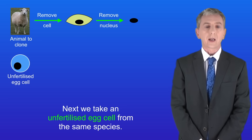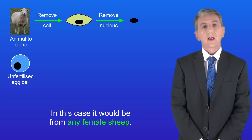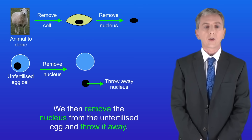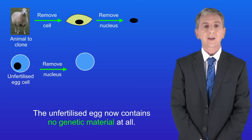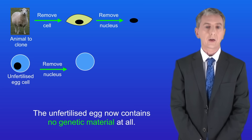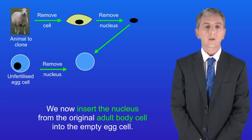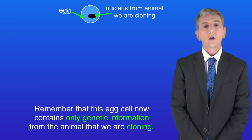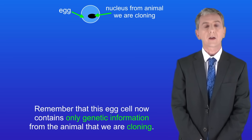Next we take an unfertilised egg cell from the same species — in this case from any female sheep. We then remove the nucleus from the unfertilised egg and throw it away, so the unfertilised egg now contains no genetic material at all. We now insert the nucleus from the original adult body cell into the empty egg cell. This egg cell now contains only genetic information from the animal that we're cloning.